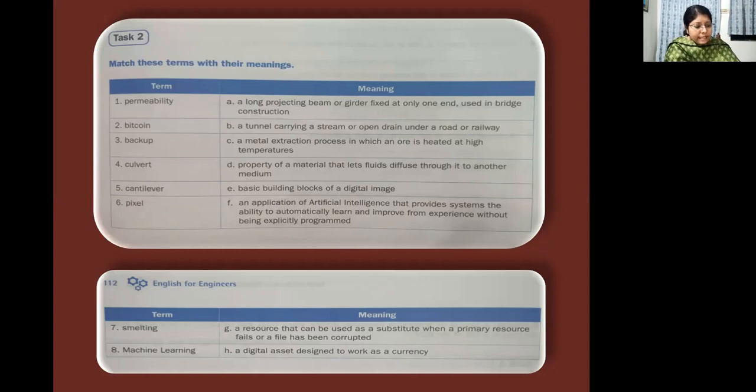Next, you have cantilever. Now, what is the meaning of that? Fifth one. So what matches with that? Cantilever means a long projecting beam or girder fixed at one end used in a bridge or construction. Next, you have pixel. Now, what is the meaning of the word pixel? Basic building blocks of a digital image. What do you mean by pixel? The basic building blocks of a digital image.